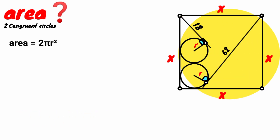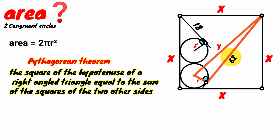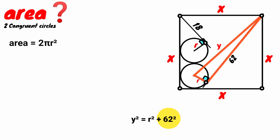Now draw a line that connects this point and this. Assume its length to be y. Look at this triangle — it is a right-angle triangle. We have the length of this side to be r, that of this side is y, and this is 62 units. We can use the Pythagorean theorem, which states that the square of the hypotenuse equals the sum of the squares of the two other sides. Applying it here: y² = r² + 62², and 62² is 3844, so y² = r² + 3844.